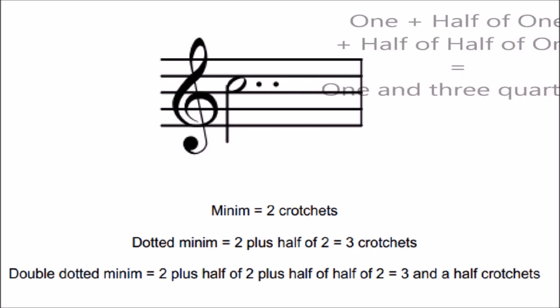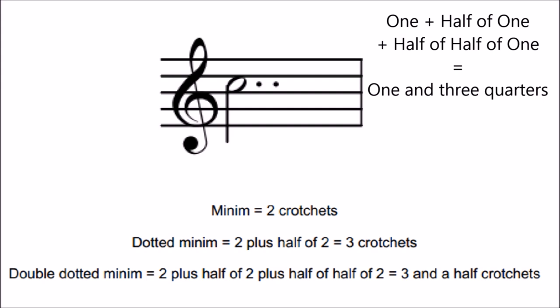Similarly, a double dotted crotchet is worth 1 and 3 quarter crotchets, and a double dotted quaver is worth 7 eighths of a crotchet.